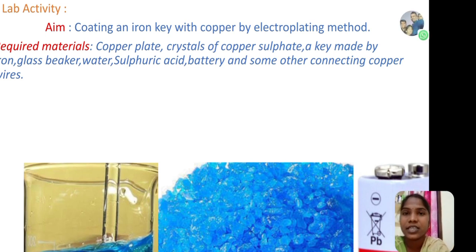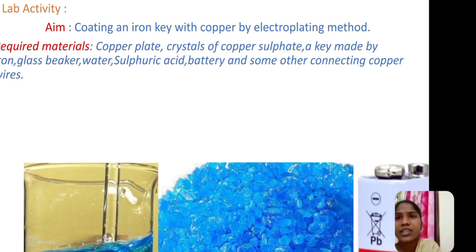The aim of lab activity is coating an iron key with copper by Electroplating method. The required materials are copper plate, crystals of copper sulfate, a key made by iron, glass beaker, water, sulfuric acid, battery and some connecting copper wires.